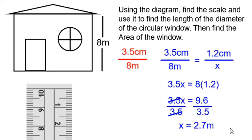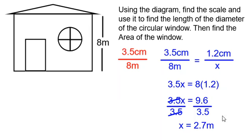That is the length of the diameter of the window. But I need the radius of the window when I do the area of a circle formula. So I need to find the radius from the diameter.